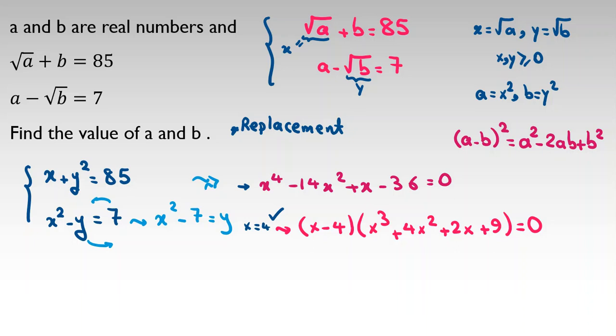Now we should check two parts. The first one is 0, x minus 4 equals 0. So we conclude x is 4, and because of this, y equals x squared minus 7, which is 4 squared minus 7, 16 minus 7, which will be 9. So x is 4, y is 9. What can we say about a? a is x squared, b is y squared. So a will be 16 and b will be 81.